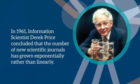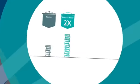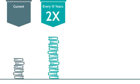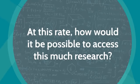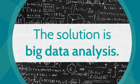In 1961, information scientist Derek Price concluded that the number of new scientific journals has grown exponentially rather than linearly, doubling every 15 years and increasing by a factor of 10 during every half century. At this rate, how would it be possible to access this much research? The solution is big data analysis.